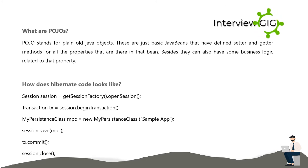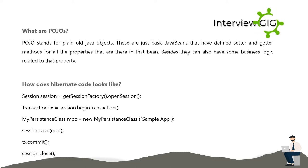How does Hibernate code look like? Session session = getSessionFactory().openSession(); Transaction tx = session.beginTransaction(); MyPersistenceClass mpc = new MyPersistenceClass(); session.save(mpc); tx.commit(); session.close();